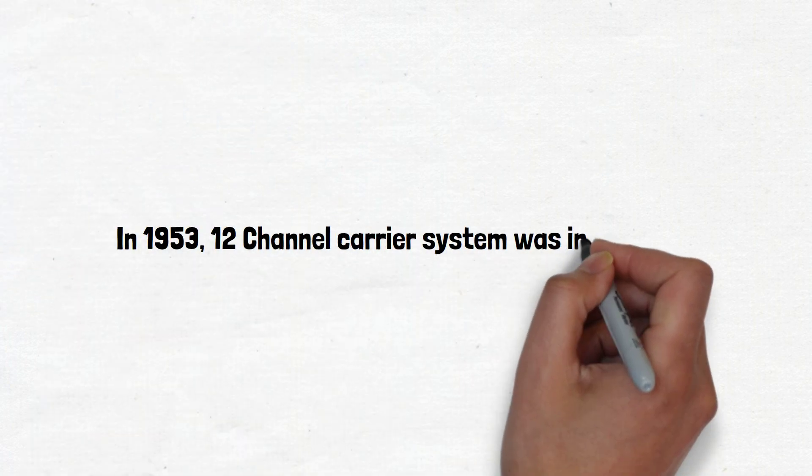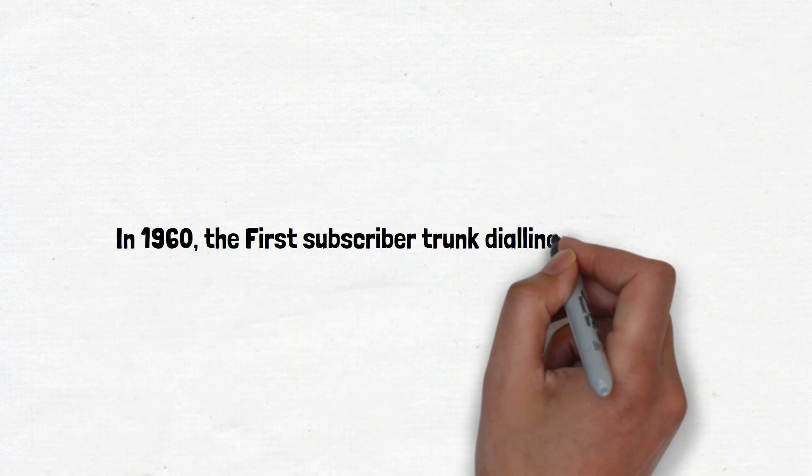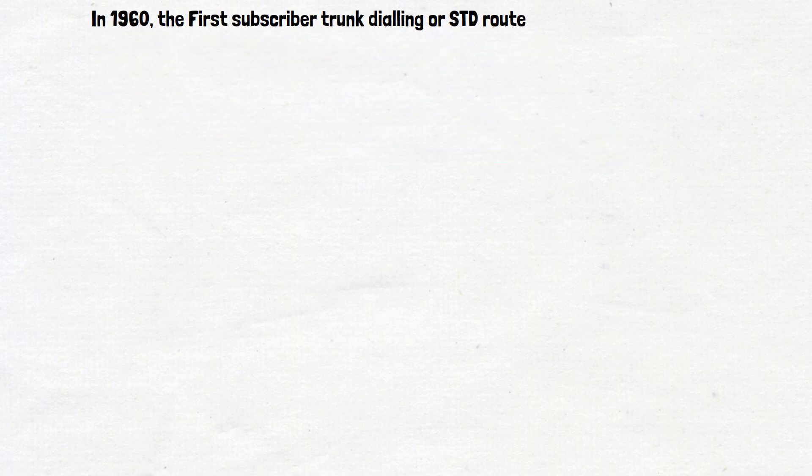In 1953, 12-channel carrier system was introduced. In 1960, the first subscriber trunk dialing or STD route was commissioned between Lucknow and Kanpur.